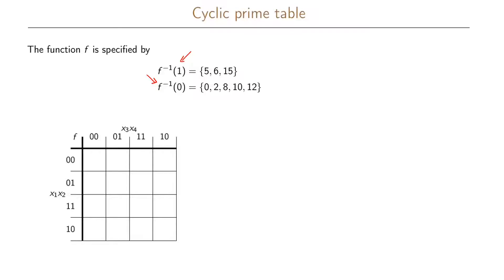So let us fill in first the onset of our function. We have a 1 here, we have a 1 here, and we have a 1 here. For the offset we have the offset at the position 0, 2, 8, 10, and 12. And for the rest of the positions we have our don't care term, so don't care set.